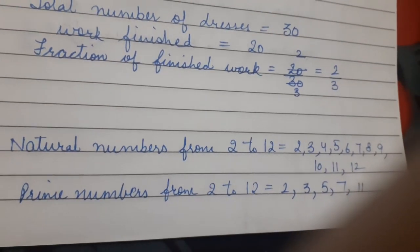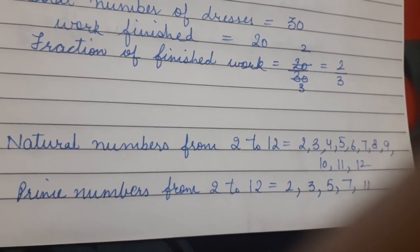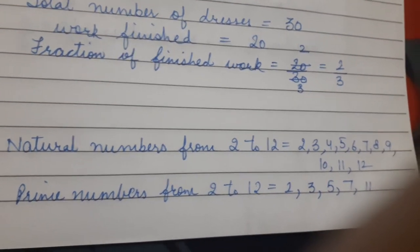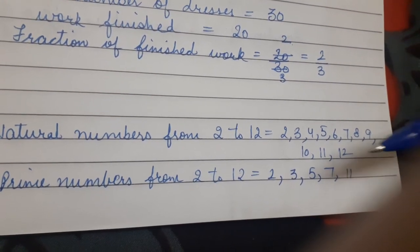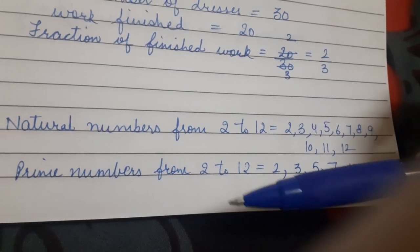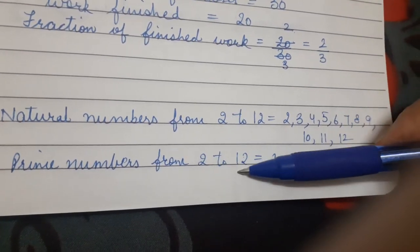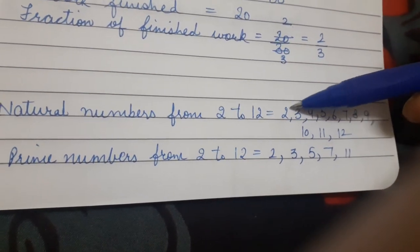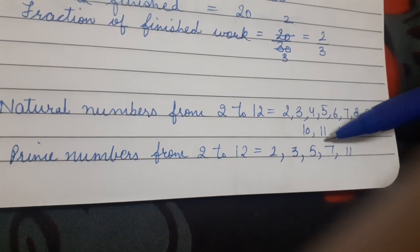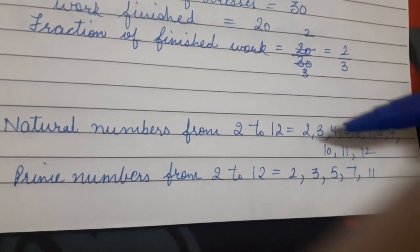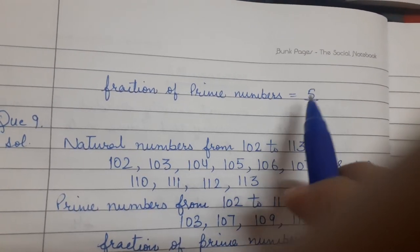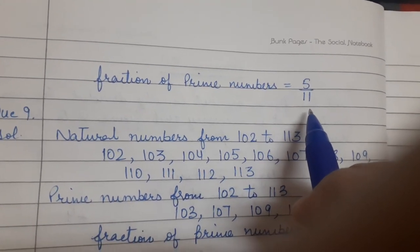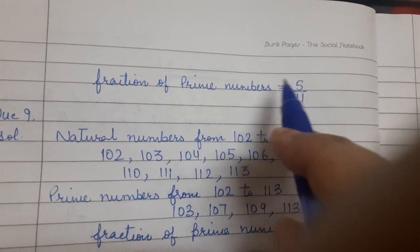Write the natural numbers from 2 to 12. What fraction of them are prime numbers? So first of all we will write the natural numbers from 2 to 12: 2, 3, 4, 5, 6, 7, 8, 9, 10, 11, 12. Then we are going to find out prime numbers from 2 to 12. As I know 2, 3, 5, 7 and 11, these are 5 prime numbers among all these natural numbers. So the fraction of prime numbers is 5 by 11. 5 numbers are prime out of 11.